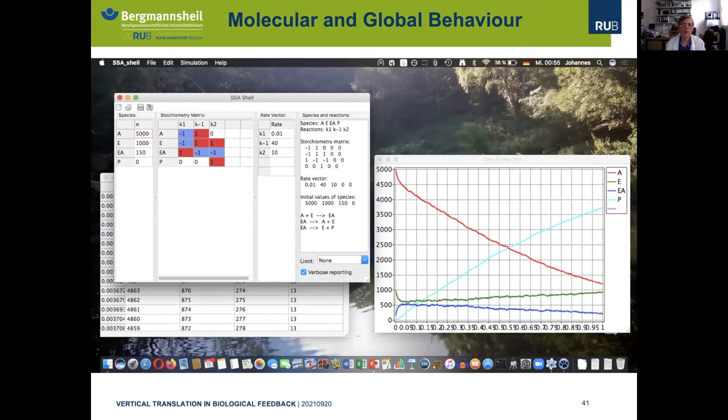For this we have written a simulation program which implements the Gillespie algorithm—a very well-known stochastic simulation algorithm. It simulates a few thousand molecules. What you see here on the right is the behavior over time. A, the red curve, is the vanishing substrate, and the cyan curve, P, is the product being formed over time. What you also see is that the concentrations of the enzyme and the enzyme-substrate complex are quite low and remain more or less constant over time.